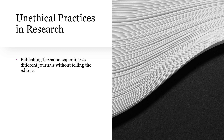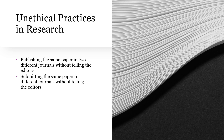One unethical practice is publishing the same paper in two different journals without telling the editors. When we send our papers for publication, one research study cannot be published in two different journals. Hiding this information from editors is definitely unethical. The moment our research is published in any journal, it becomes a property of that journal, so we cannot publish it in two different journals.